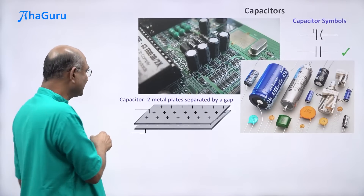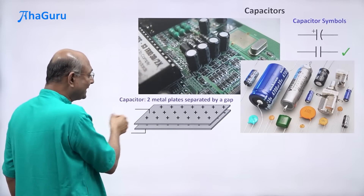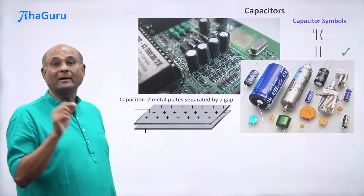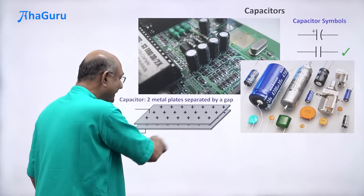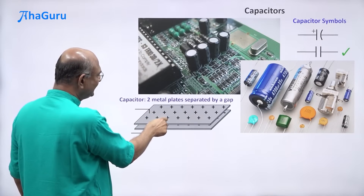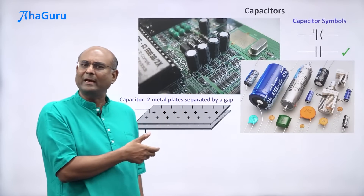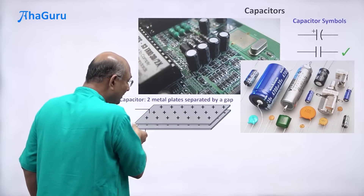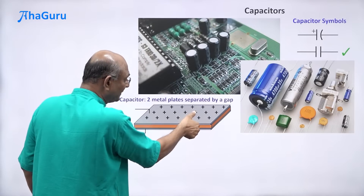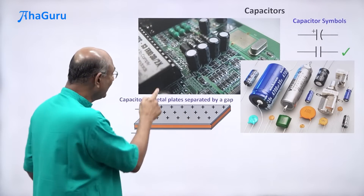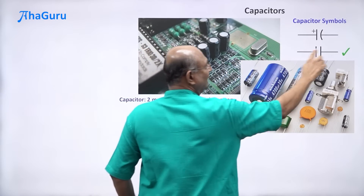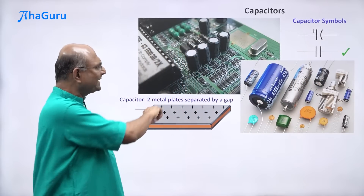You connect these plates with wires to a battery. The battery takes electrons from the top plate and moves them to the bottom plate, so the top plate gets a net charge of plus Q and the bottom plate gets minus Q — equal and opposite charges. To prevent the plates from attracting and touching, we put an insulating sheet called a dielectric in between. You can now see why two parallel lines are the symbol for a capacitor — they represent two metal sheets connected by wires.